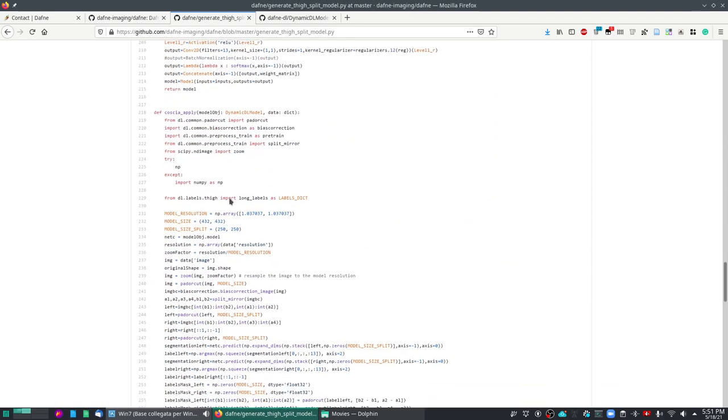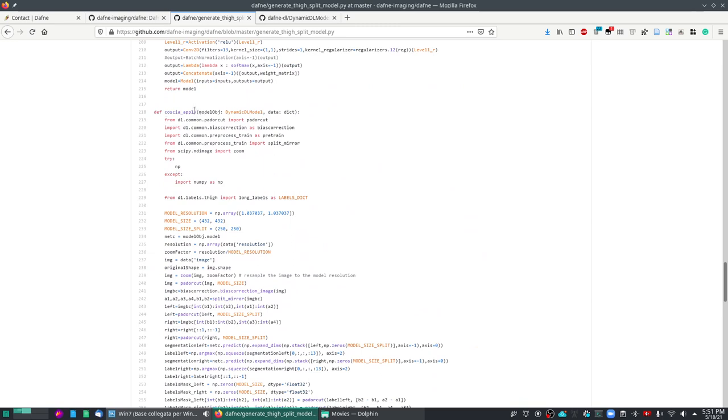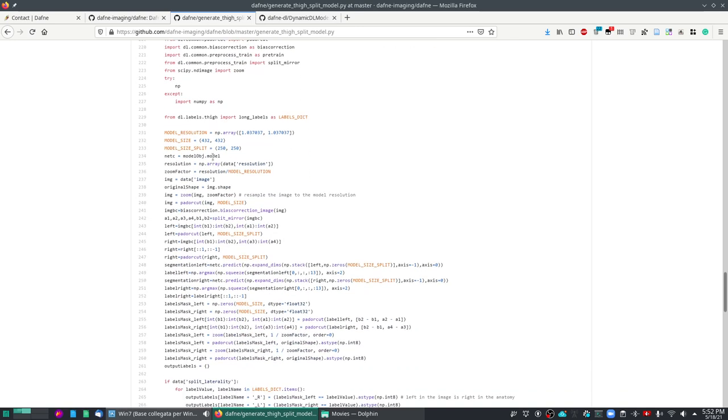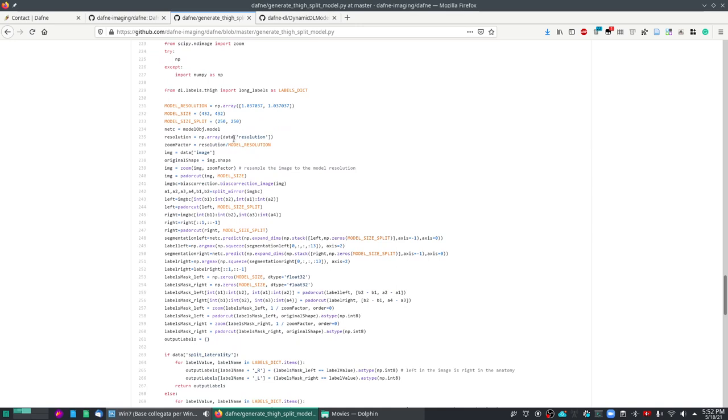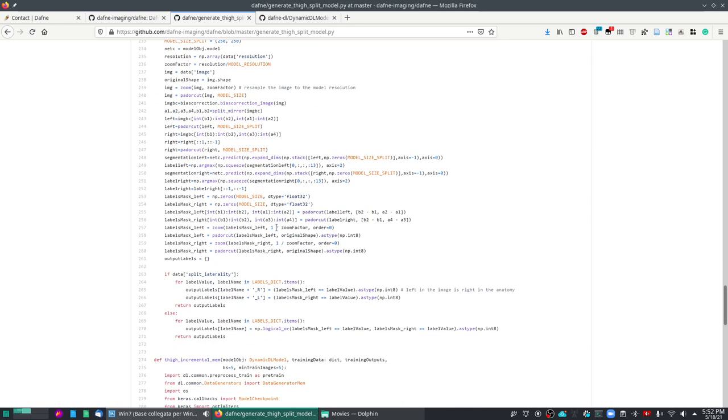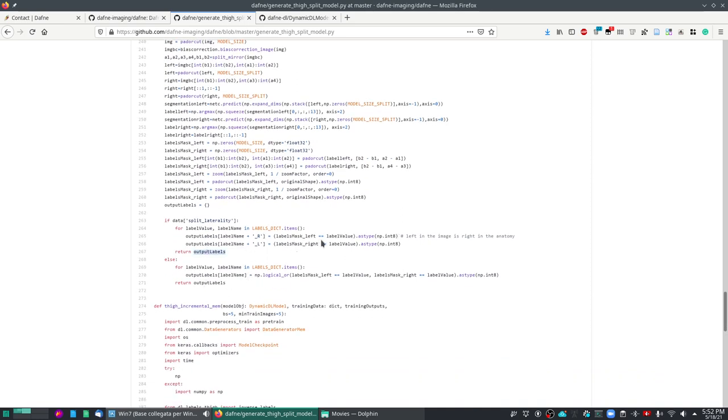Similarly we have here the apply function that contains a reference to the object dynamic dl model and the input dictionary as defined before. The actual network is retrieved as the model field of the model object, and then all the other processing is basically a standard pre-processing of the image and resizing it to the correct voxel size at which the model was trained and then returning the dictionaries.